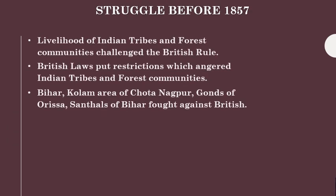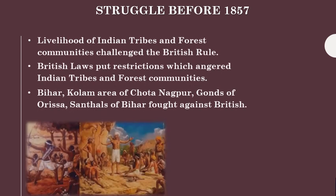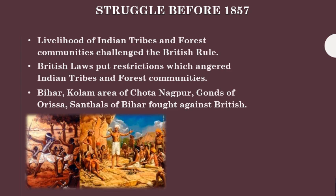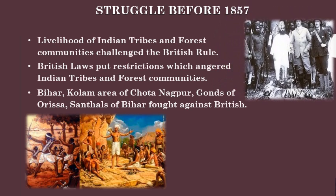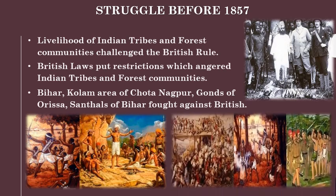The Indian tribes and forest communities also challenged British rule. Their livelihood was dependent on forest resources, but British laws put restrictions on those resources. Consequently, people of Bihar, the Kolam area of Jharkhand-Nagpur, the Gonds of Orissa, and the Santals of Bihar fought against the British. The Gadkaris from Kolhapur and Phond Savants from Konkan also challenged the British.